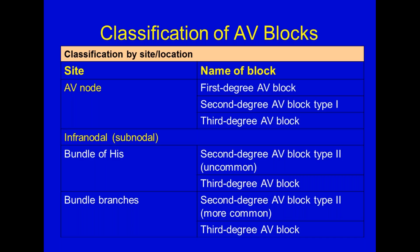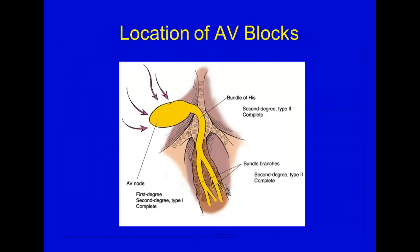People can walk around with these. If we EKG'd everyone in this room, we might have somebody here with a first degree block. There's an illustration showing where these different blocks occur - some learn better from a table format, some from a diagram, but it's the same information either way.